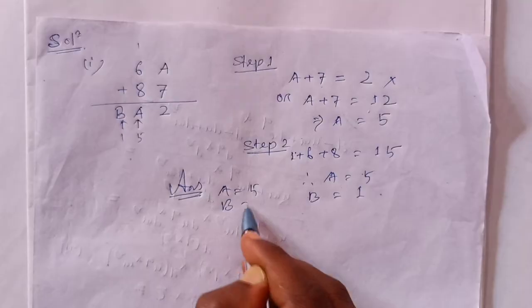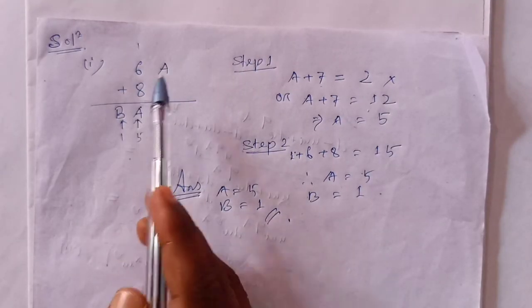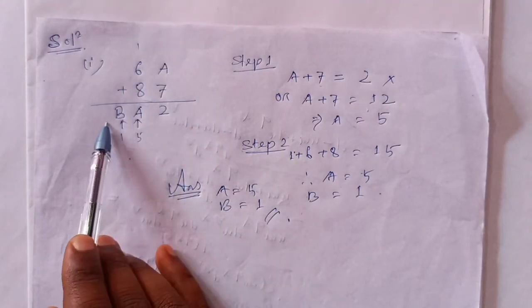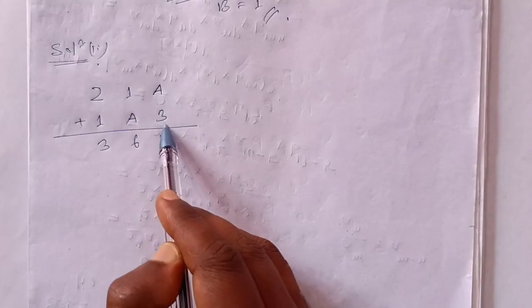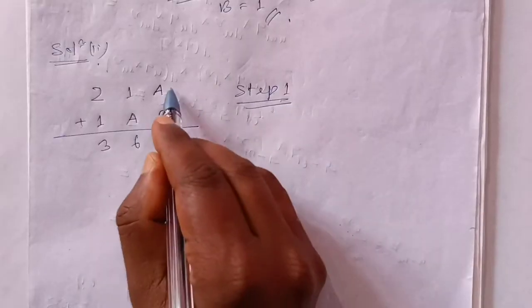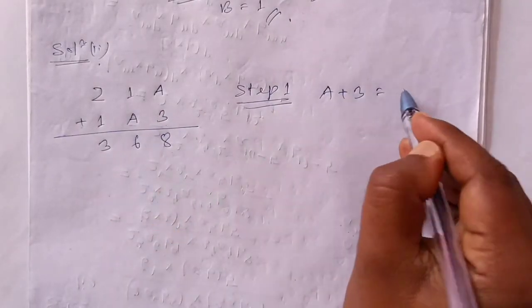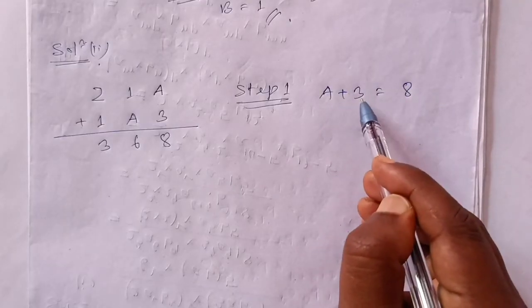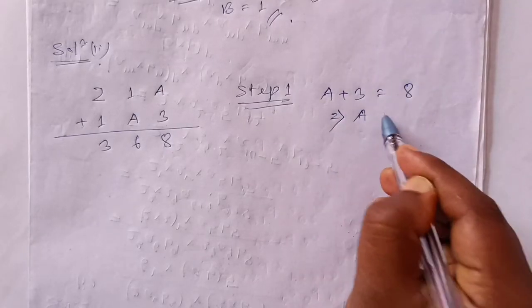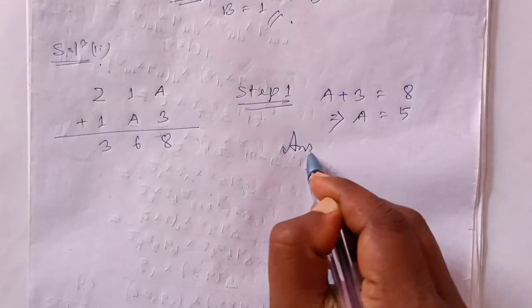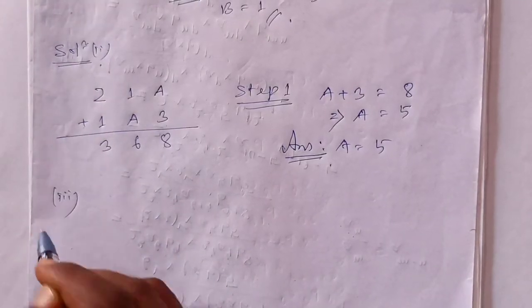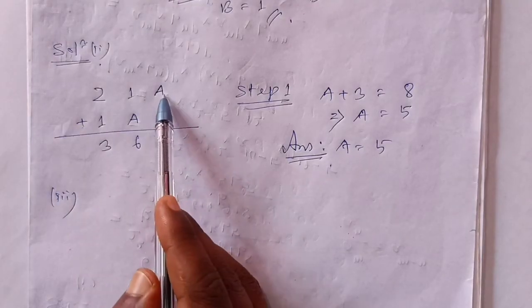If A is equal to A5, then B is equal to 1. Step 1 is equal to A plus 3 is equal to 8. If A is equal to A5, then A is equal to A5. Step 2 is equal to A5. If A5 is equal to A5.